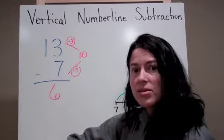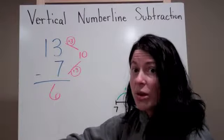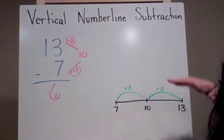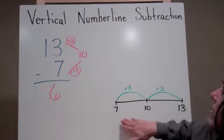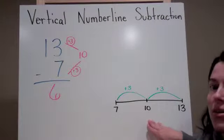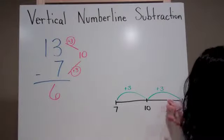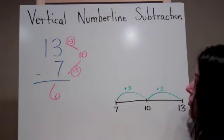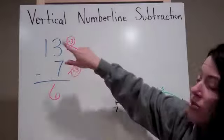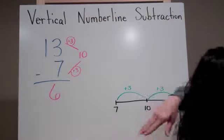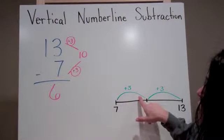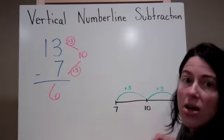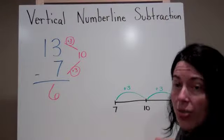Now what does this look like on the horizontal number line, which is what we normally use? Here we have it. We've started at the 7, we've jumped through our 10, which is our friendly number, and then we've landed on 13, which is the number that we are trying to take away from. Now we can either go forward or we can go backwards. Either way, we have two jumps of 3.